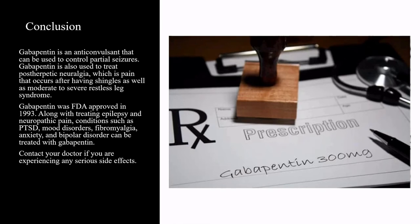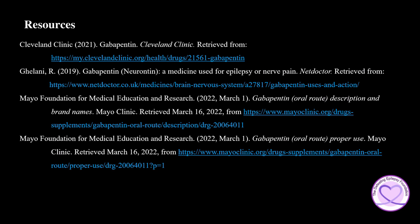In conclusion, gabapentin is an anticonvulsant that can be used to control partial seizures. Gabapentin is also used to treat postherpetic neuralgia, which is pain that occurs after having shingles, as well as moderate to severe restless leg syndrome. Gabapentin was FDA approved in 1993. Along with treating epilepsy and neuropathic pain, conditions such as PTSD, mood disorders, fibromyalgia, anxiety, and bipolar disorder can be treated with gabapentin. Contact your doctor if you are experiencing any serious side effects. To learn more about gabapentin, please check out the resources used in the presentation today.